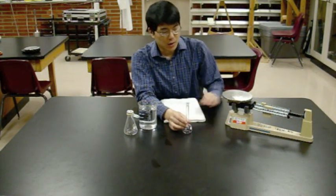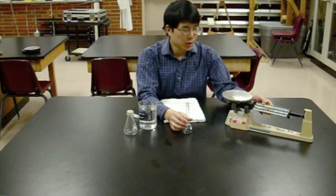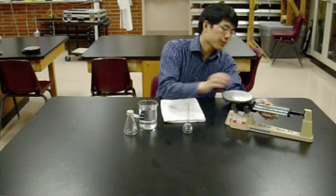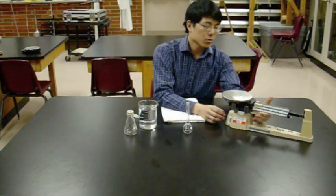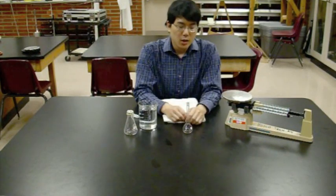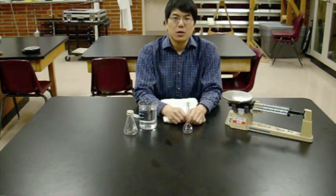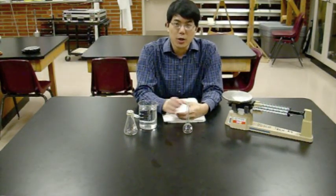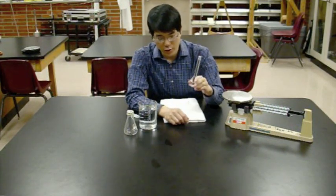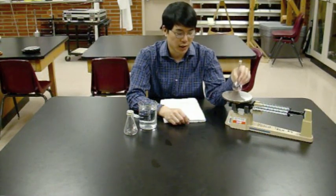In this section of the lab, we're going to be using the triple beam balance. And the reason we're using that is because we're going to be taking some measurements in these two sections, section 2 and 3, that exceed the 200 gram limit of the electronic balance. So start off by measuring the mass of the empty volumetric flask.